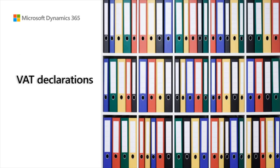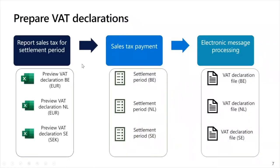Now we'll start with more details about how to execute and set up VAT declarations. Here is the high-level process of how VAT declarations are generated. During the reporting period, you run the 'Report sales tax for settlement period' procedure for each of your tax registrations and preview the VAT declaration in Excel format. Amounts in these reports are generated in the currency of the sales tax codes. Then, at the end of the period, you run the sales tax settlement procedure for each tax settlement period. After that, you are ready to generate the VAT declaration file, which you will do from the Electronic Messages module. For each country, there is an Electronic Messages processing that you execute to get the file for the country.